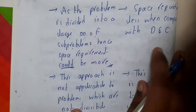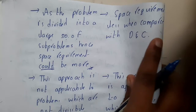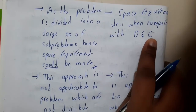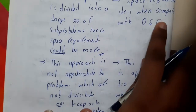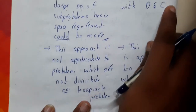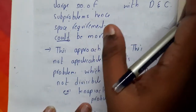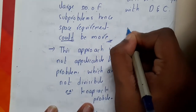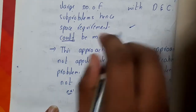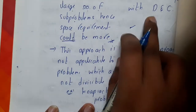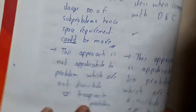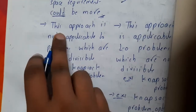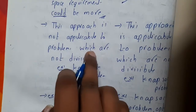Space requirement is less in greedy approach when compared to divide and conquer, because you will be checking only locally — which value is maximum or minimum — and continuing. This process is essentially a one-way or one-step process.